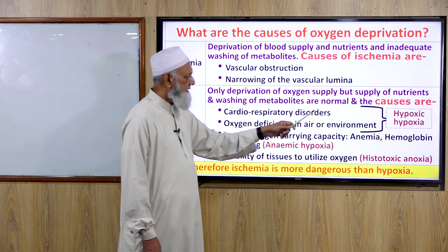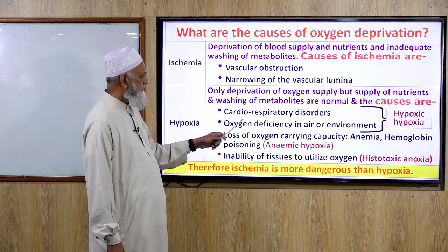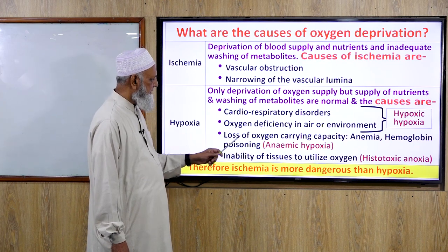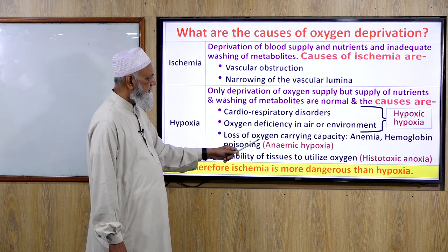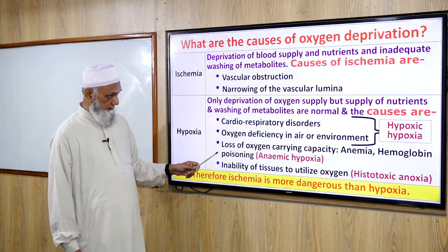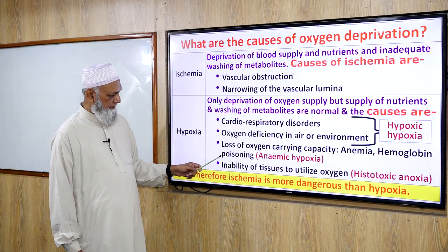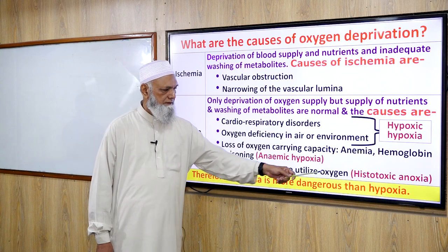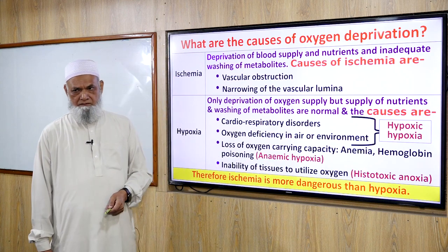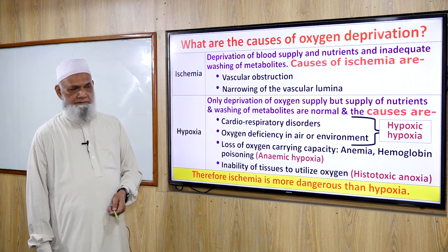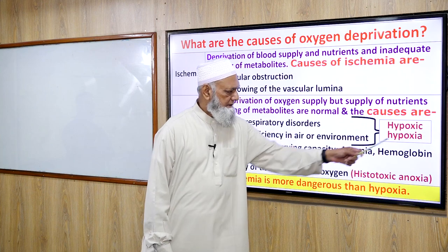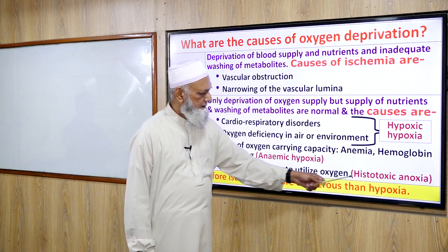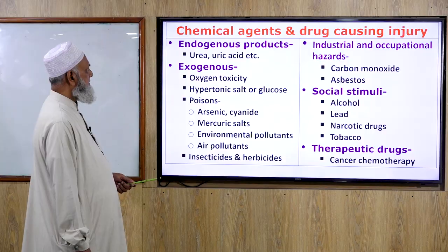Causes of hypoxia include cardiorespiratory disorders, oxygen deficiency in the air or environment, loss of oxygen-carrying capacity (anemia), hemoglobin poisoning, and inability of the tissue to utilize oxygen — that is histotoxic hypoxia. Types: hypoxic hypoxia, anemic hypoxia, and histotoxic hypoxia.